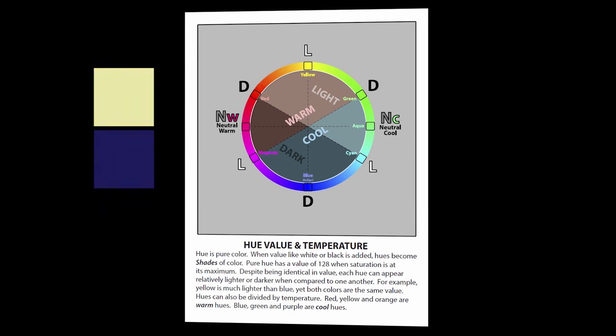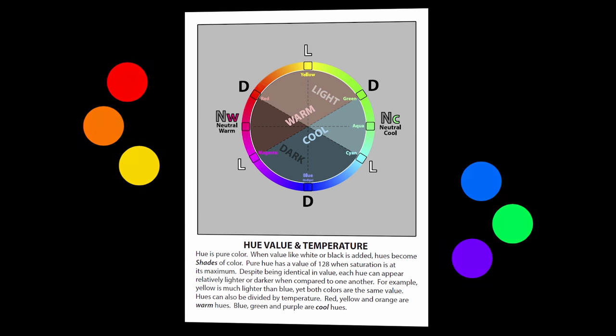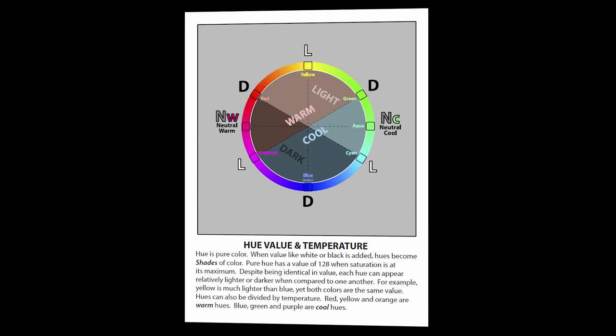Hues can also be divided by temperature. Red, yellow, and orange are warm hues. Blue, green, and purple are cool hues. So you can see on this chart there's these different regions of this little pie here. There's a light region and a dark region. There's a warm region and a cool region.